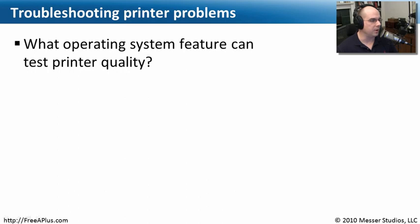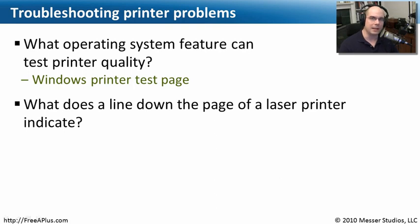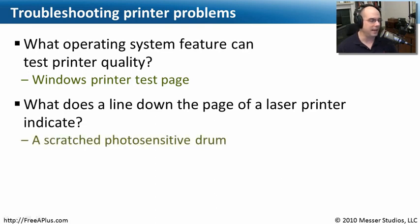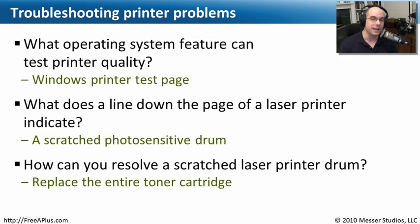Let's recall some key points about troubleshooting printer problems. The first question: what operating system feature can test printer quality? We can open the properties of a printer inside of Windows, and at the bottom is a Windows printer test page button — clicking that sends output to the printer so you can see how well the OS and printer are communicating. If you have a black line down the entire page of a laser printer printout, that indicates a scratched photosensitive drum — the scratch repeats all the way down the page. Unfortunately, you have to replace the drum, and in most cases that means replacing the entire toner cartridge.